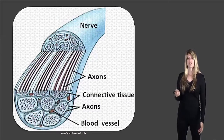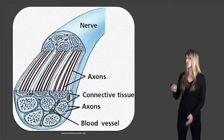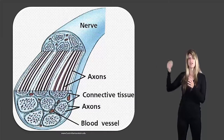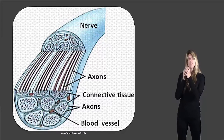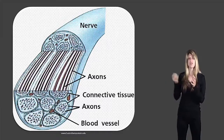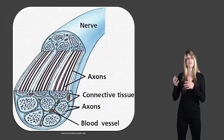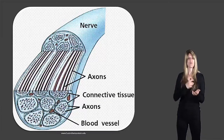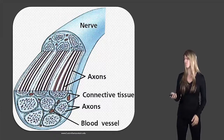Here's a close-up of a nerve — you can see there are many many axons running through the nerve. They're surrounded by connective tissue which helps hold the structure of the nerve, and there are also blood vessels moving through there to give oxygen to those cells, remove carbon dioxide, and provide nutrients.